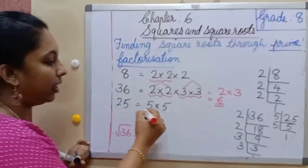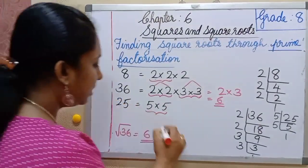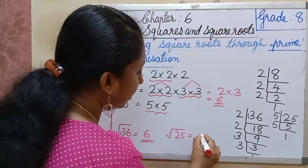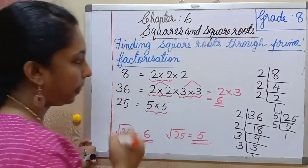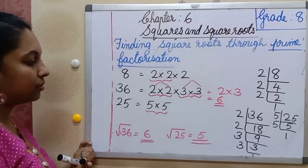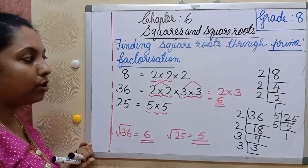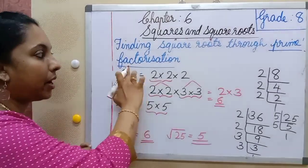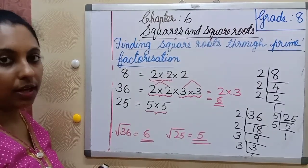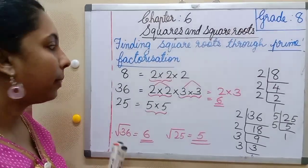Same way, for 25 we have one pair of 5s, so the square root of 25 is equal to 5. This is how we find the square root using the prime factorization method. Now let's do one more example: 6400.